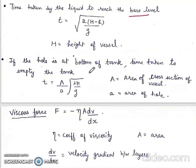If the hole is at the bottom of tank, time taken to empty the tank. T is equal to capital A by small a square root 2h by g. Capital A is area of cross section of vessel. Small a is area of hole.